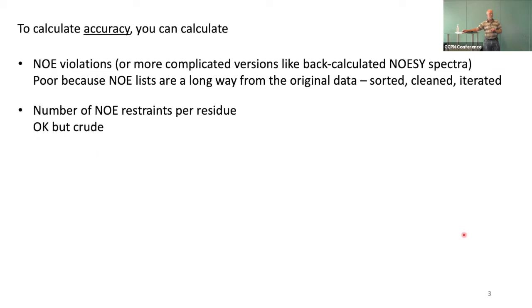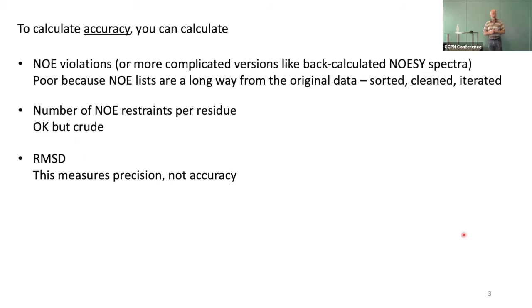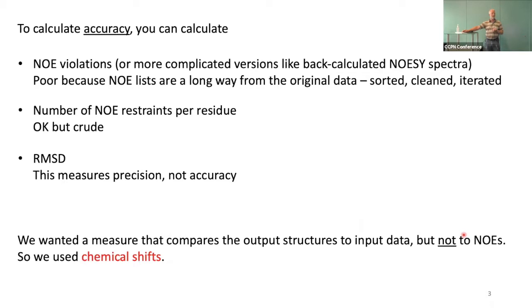You could look at something much simpler like the number of NOE restraints, but that's not really comparing to input data and it's pretty crude. The measure most people use to say whether structures are nice is the RMSD — the root mean squared distance between all the structures in your ensemble. That is very explicitly a measure of precision, not accuracy. Precision and accuracy are definitely not the same thing, and what we want is accuracy.